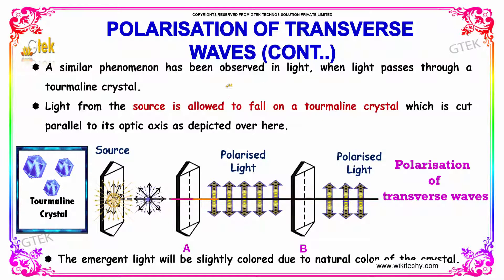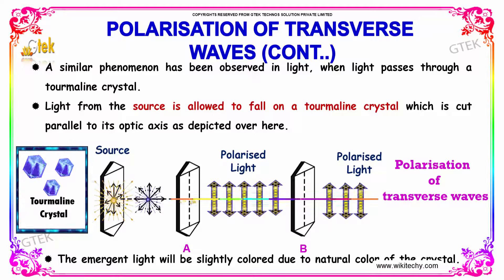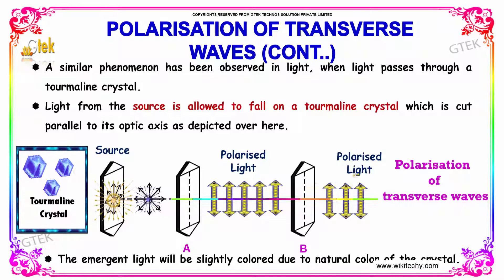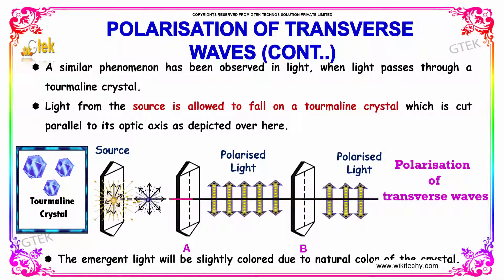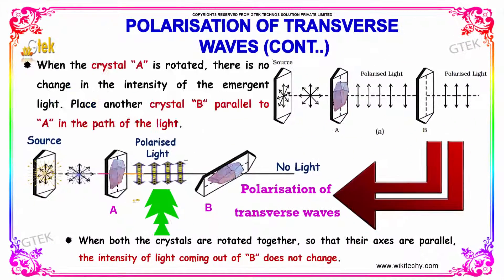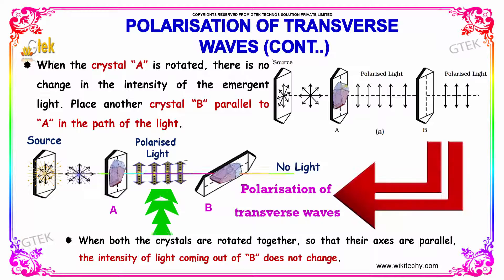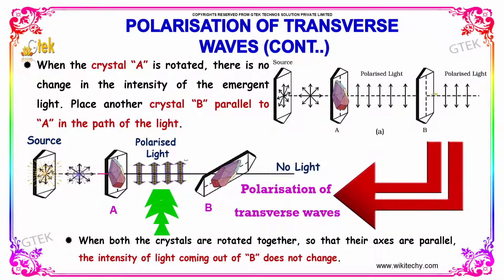A similar phenomenon has been observed in light when light passes through a tourmaline crystal. Light from the source is allowed to fall on a tourmaline crystal which is cut parallel to its axis. The emergent light will be slightly colored due to the natural color of the crystal. This is referred to as polarized light. When the crystal A is rotated, there is no change in the intensity of the emergent light, with crystal B parallel to A in the path of the light.